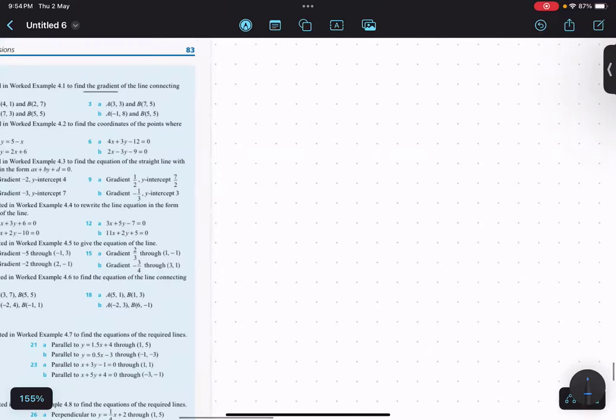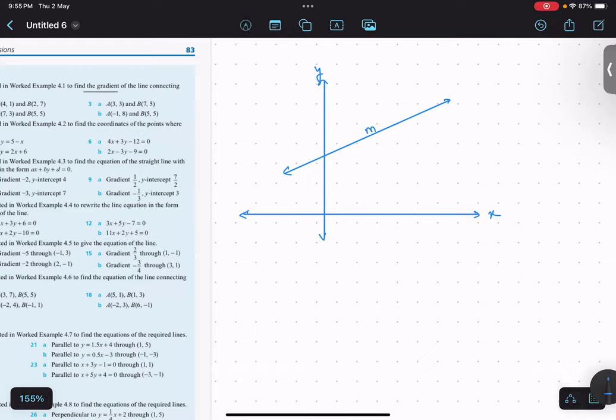Gradient means slope. If we have a line on an x and y plane - this is x axis, this is y axis, and this is our line - what is the slope? How inclined it is? It's represented by m. Is that thing clear? We have done this thing before also.